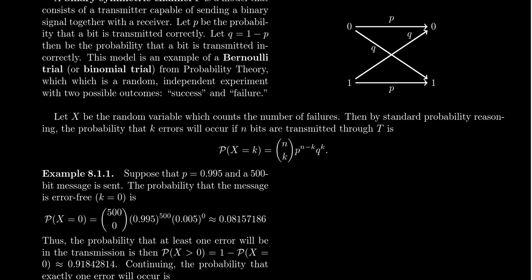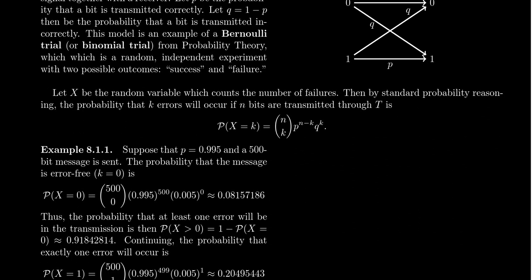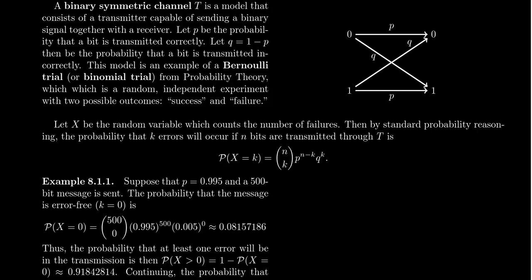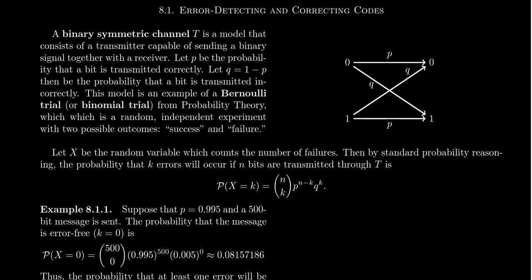The first thing I want to talk about in this video is the necessity of error detection and error correction. I'm going to deviate a little bit into random variables. Let me talk about the idea of a binary symmetric channel T, which is illustrated with this diagram to the right. This binary symmetric channel is a model that consists of a transmitter capable of sending a binary signal together with the receiver. You have your sender, which is one part of the computer, and you also have this receiver.